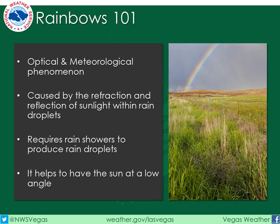Rainbows are considered both optical and meteorological phenomena. This is because we need both the physics of light, or optics, and rain showers to create a rainbow. Rainbows are caused by the refraction and reflection of sunlight within rain droplets, so there must be rain showers or another source of droplets for a rainbow to exist. While not necessary, it's helpful to have the sun at a low angle in the sky, such as near sunrise or sunset.